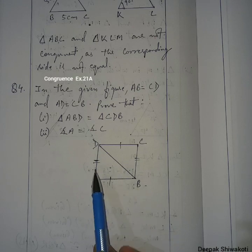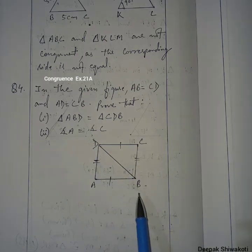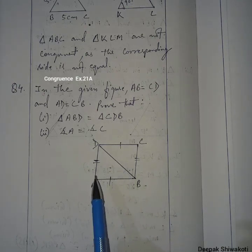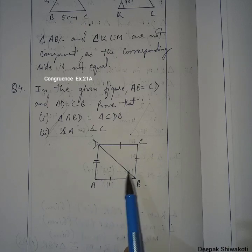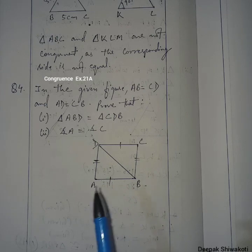By looking at the figure, this side and this side are equal, this side and this side are equal, and the side DB is common to both triangles. So by Side-Side-Side congruency condition, these two triangles are congruent to each other.